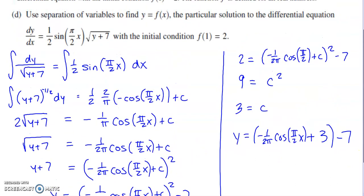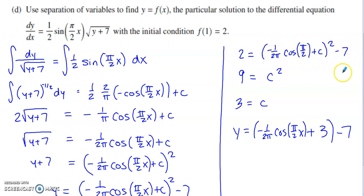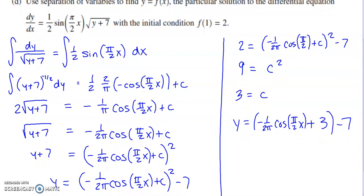Now I plug in the initial condition: when x is 1, y is 2. So 2 goes in for y and 1 goes in for x. When 1 goes in for x, we get cosine of pi over 2, which equals 0, so that term drops away. We're left with C squared minus 7 equals 2. Adding 7 and taking the square root of both sides gives a value of 3 for the constant C.